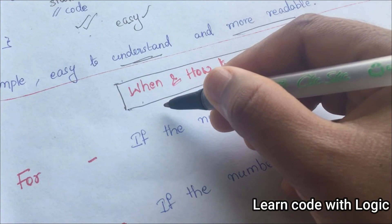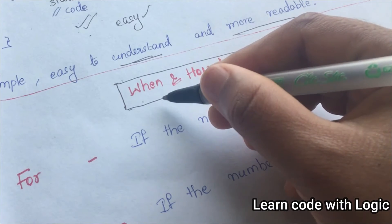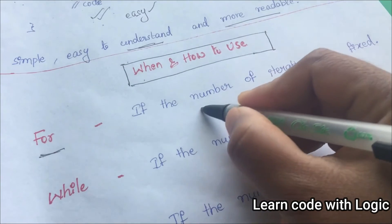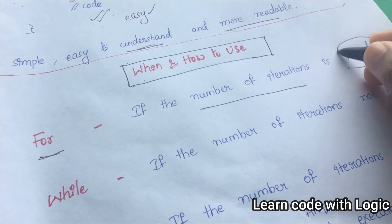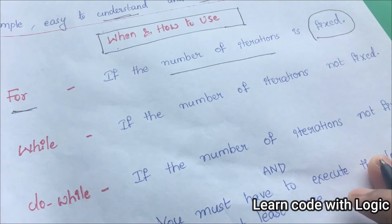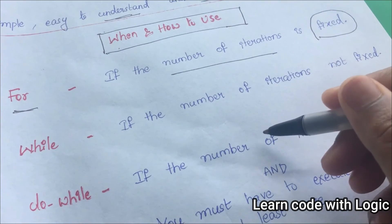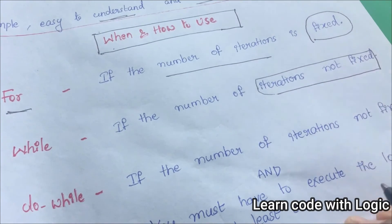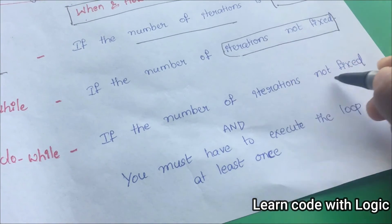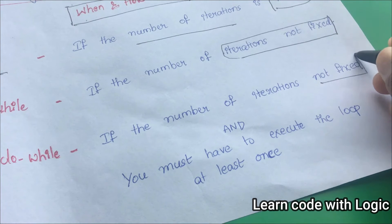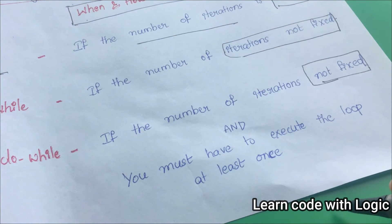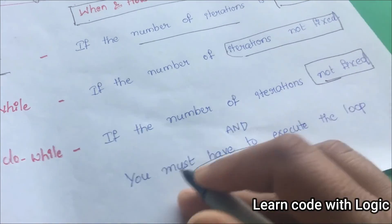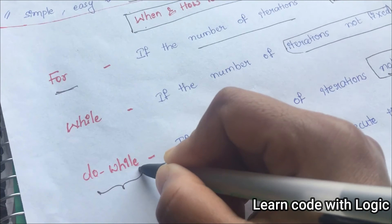The next important thing to understand is when to use for loop, while loop, or do-while loop. The for loop is used when the number of iterations is fixed. If you don't know how many iterations you need, it's preferable to use the while loop. And if the number of iterations is not fixed but you need to execute the code at least once, in that case you should use the do-while loop.